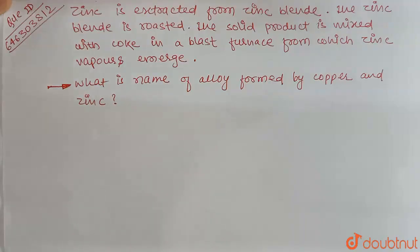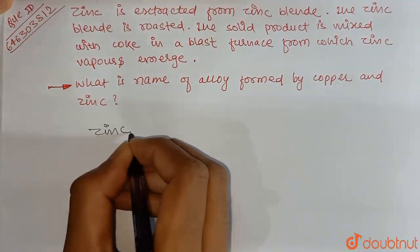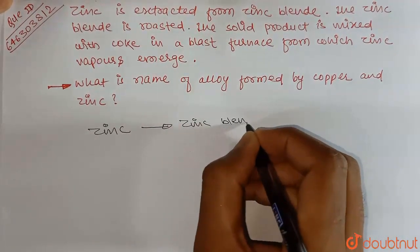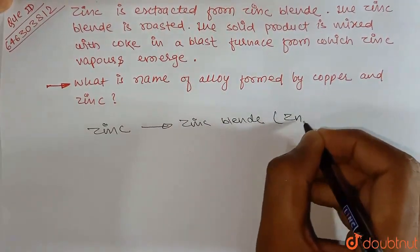Hello students, welcome to this video of Doubtnut. Here is a question given. Zinc is extracted from zinc blend, right? Where is zinc? Zinc blend. It's a sulfide of zinc, that is ZnS.